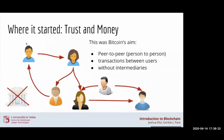This is similar to how cash works — we can pass cash directly to another user and no one can stop that transaction. But the proposal with Bitcoin was to use a digital form of cash where no central service provider can stop that transaction.